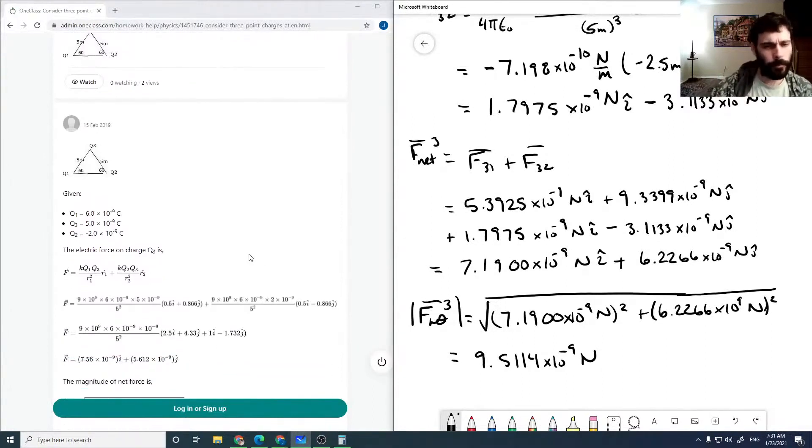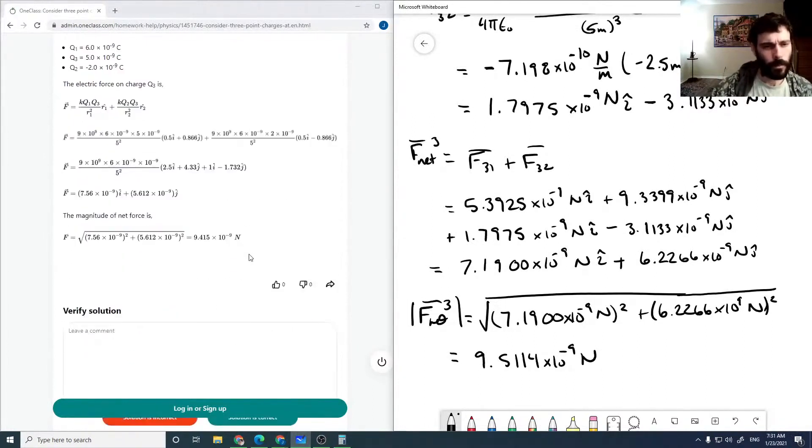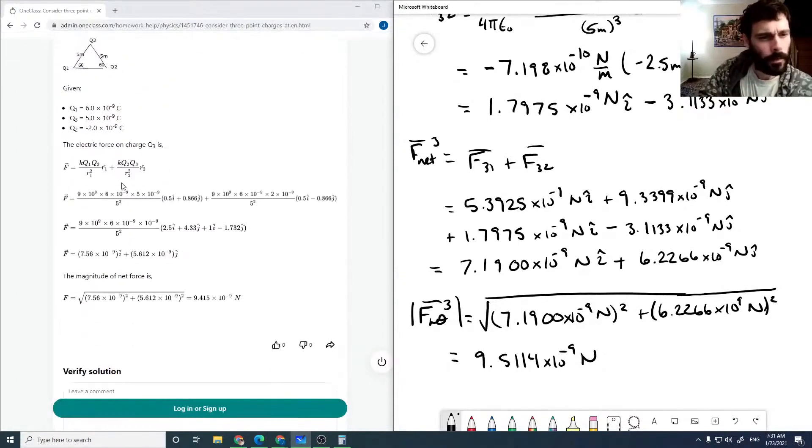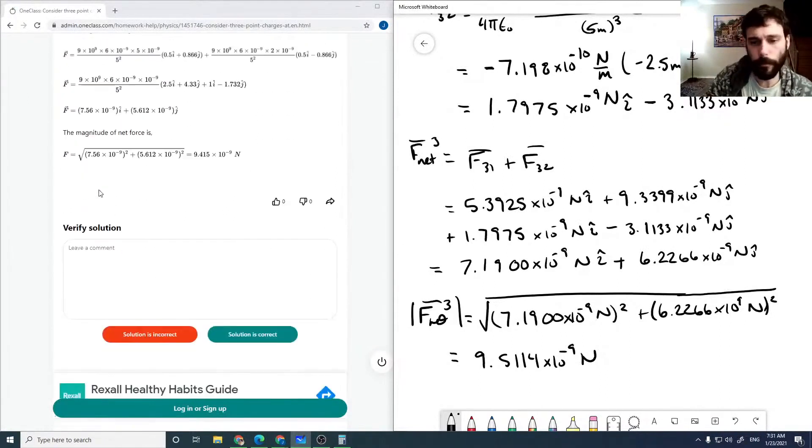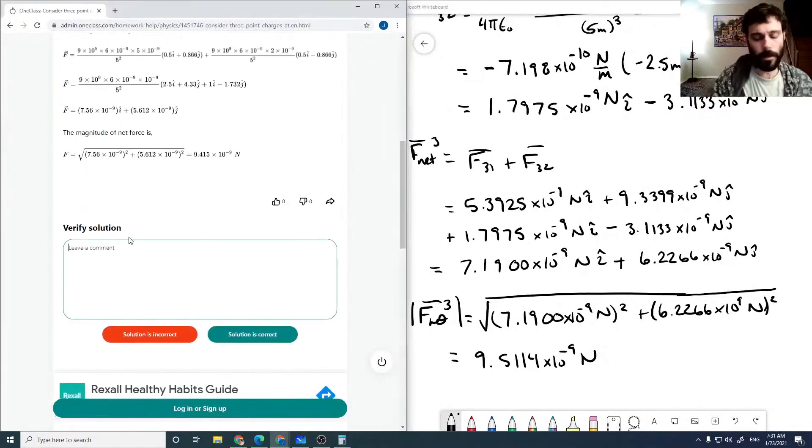About 9.5, differences would be from rounding and using 9 times 10 to the 9 for k instead of epsilon naught, but that looks good.